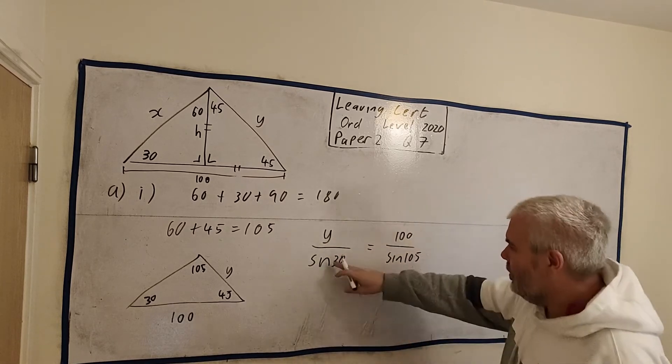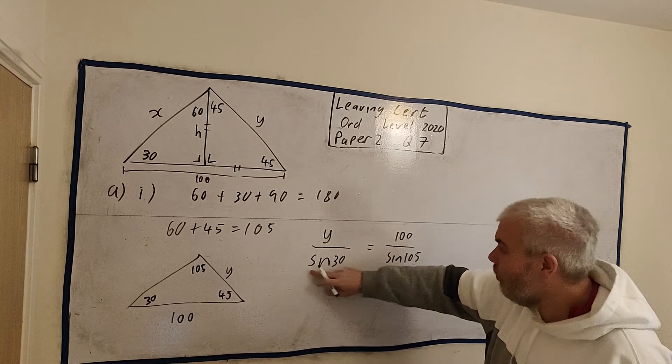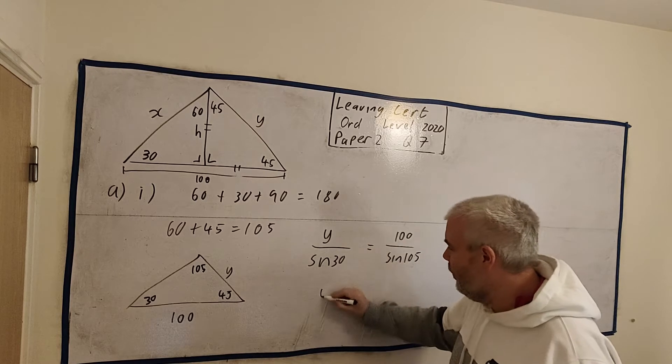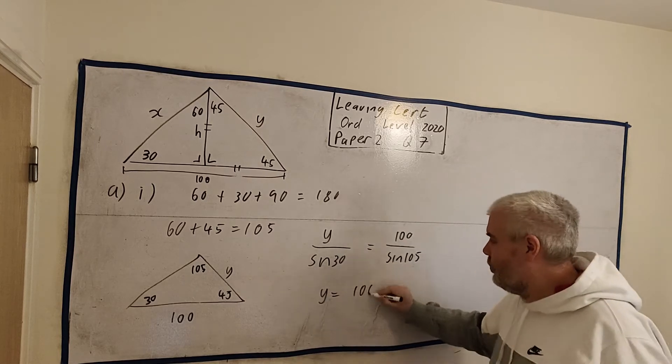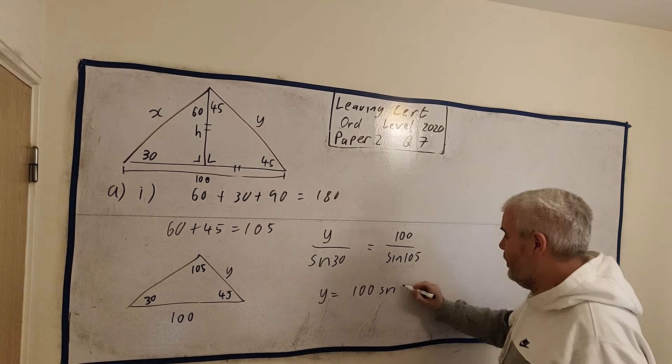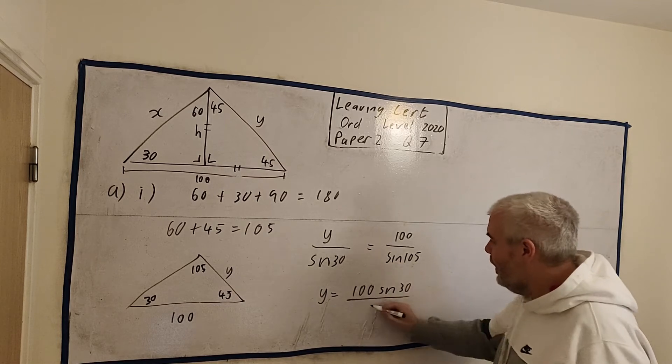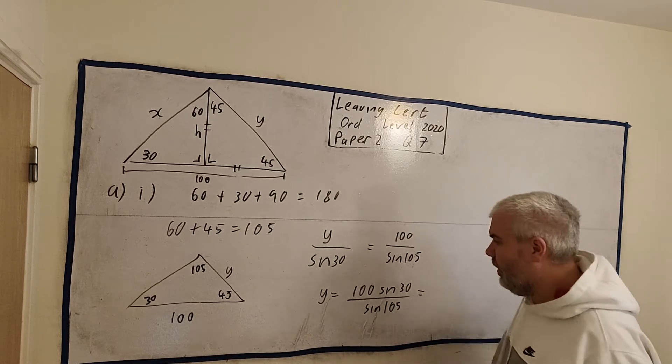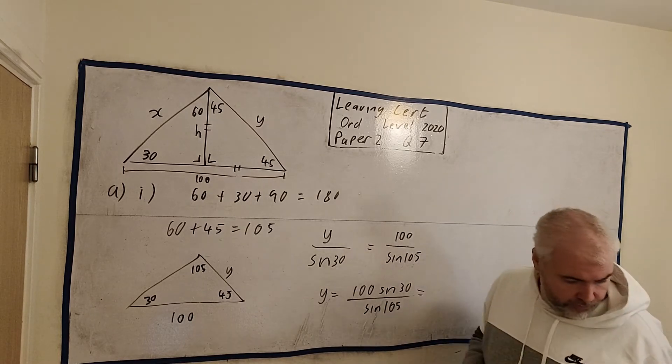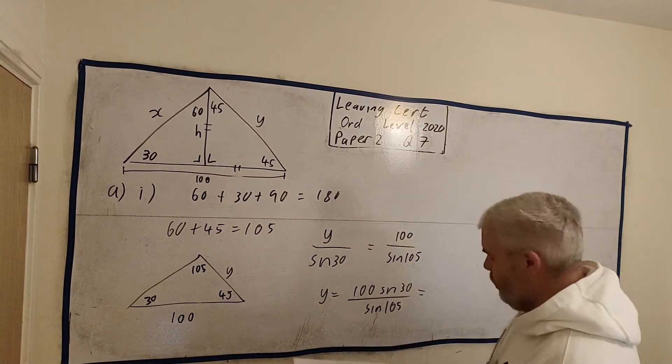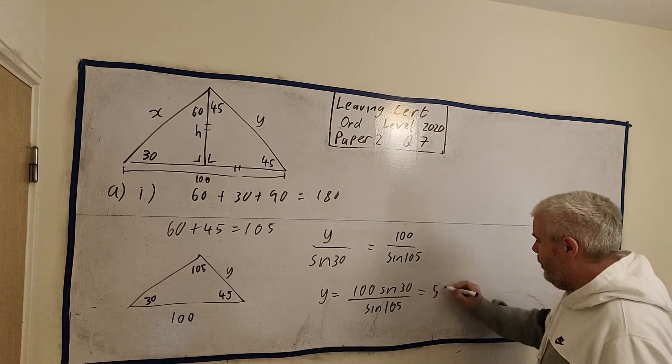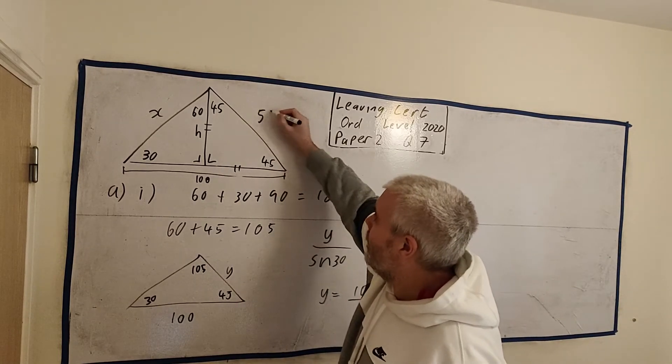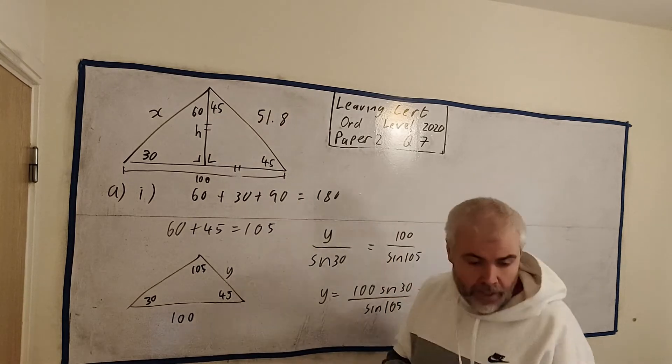So if we move this guy across, this number here, it's actually sine 30 is a half. But even if we didn't know that, Y is just equal to 100 multiplied by whatever this number is, sine 30 divided by sine 105. And I just go ahead and put that into a calculator. And it is 51.8. So 51.8 is the length of this. Let's put it in here on our master picture up here.